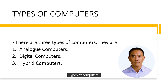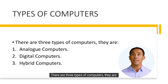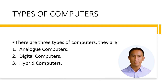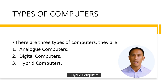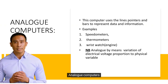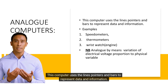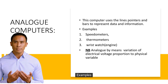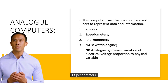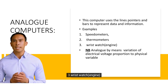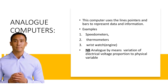Types of computers: there are three types of computers. They are: 1. Analog computers, 2. Digital computers, 3. Hybrid computers. Analog computers use lines, pointers, and bars to represent data and information. Examples include: speedometers, dot thermometers, and dot wristwatches.